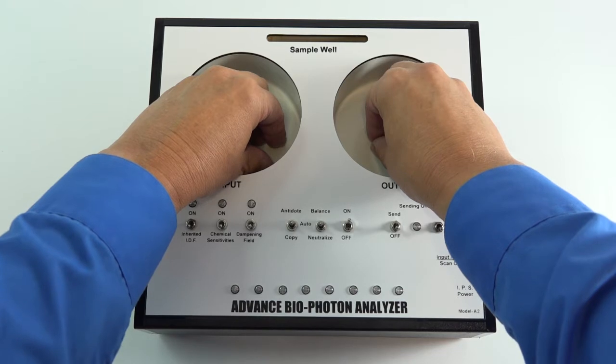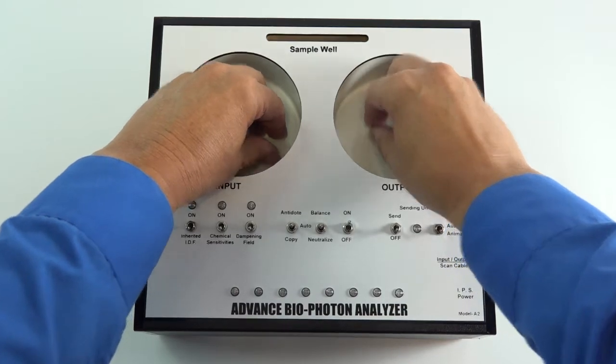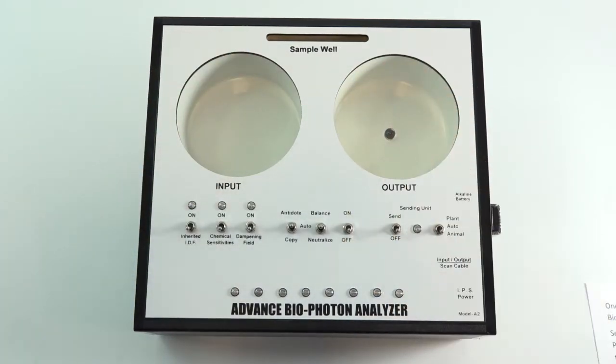Once again, after completion of the second sequence, turn off the ABPA. That completes the ABPA Quick Balance.